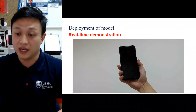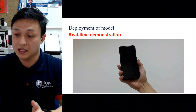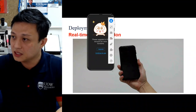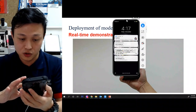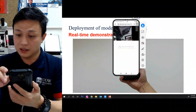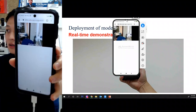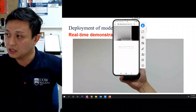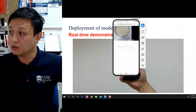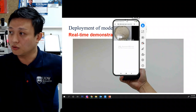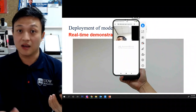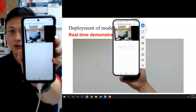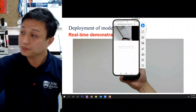Now I'll show how the model can demo and predict density in real time using my smartphone, which runs a software application that mirrors the screen. In this demo, you can see the background, and when a control sample is placed in view, the model correctly identifies it as 'control.' Anything unrelated is classified as background — this background class was included during training.